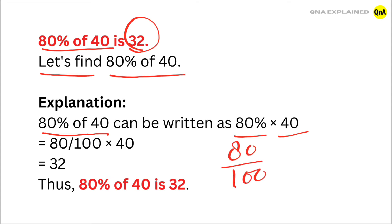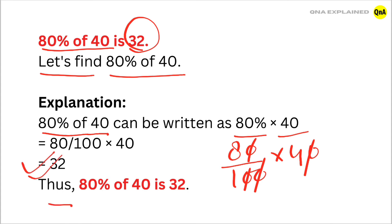80 upon 100 is multiplied by 40. Cancel out the zeros. 8 multiplied by 4 is equal to 32, thus 80% of 40 is equal to 32.